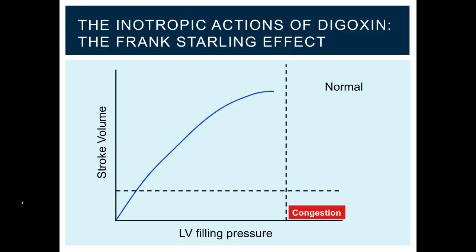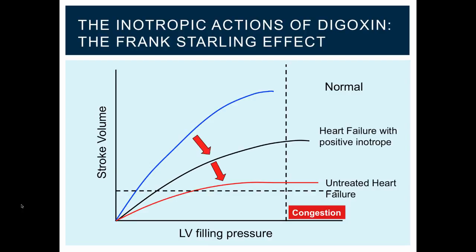One of the most important functions of digoxin is enhancement of contractility, or the positive inotropic effects. These actions can be visualized using the Frank-Starling effect. By enhancing contractility, digoxin increases cardiac output for a given end-diastolic pressure or preload pressure, improving the efficiency of the heart. If we compare a curve for normal heart function with a patient with untreated heart failure, introduction of a positive inotropic agent shifts the curve. This improvement in contractility and efficiency helps alleviate venous congestion and pushes the curve to the left.